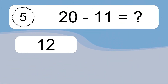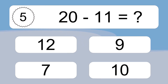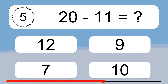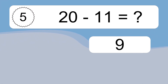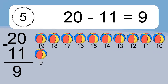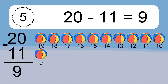20 minus 11 equals what? 20 minus 11 equals 9. Let's count it: 19, 18, 17, 16, 15, 14, 13, 12, 11, 10, 9.